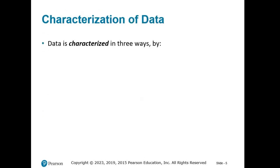Data is categorized in three ways: by set, classification, and level of measurement. We're going to be covering sets of data in this section, and we'll get to the other ways of characterizing data a little later.